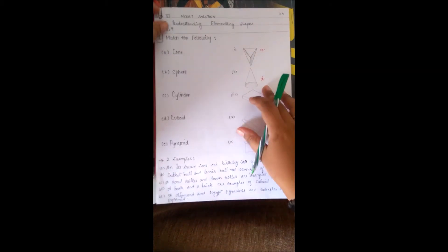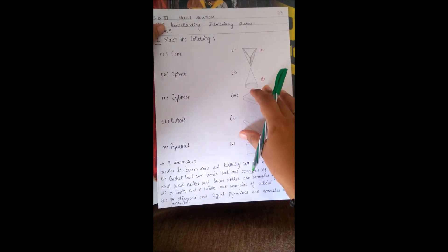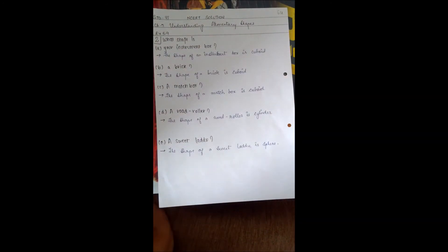the next question. Question 2: What shape is - what is the shape of your instrument box? You can see your instrument box. The shape of an instrument box is cuboid.